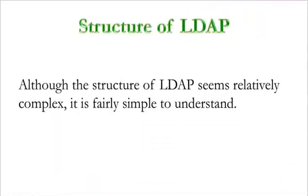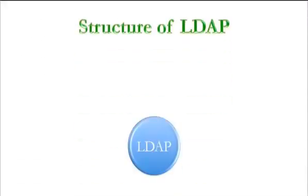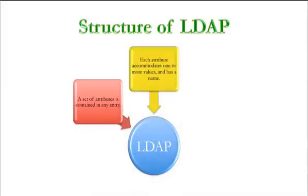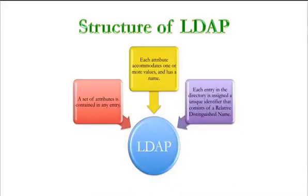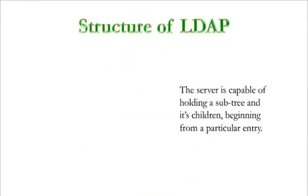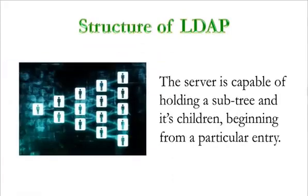Although the structure of LDAP seems relatively complex, it's fairly simple to understand. The basic structure is as follows: a set of attributes is contained in any entry. Each attribute accommodates one or more values and has a name. Each entry in the directory is assigned a unique identifier that consists of a relative distinguished name. The server is capable of holding a subtree and its children, beginning from a particular entry. In addition, there may also be brief references to other remote servers.